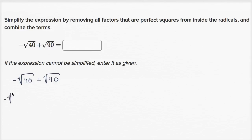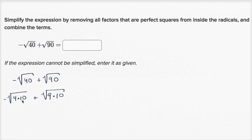So this is the negative square root of four times 10, plus the square root of — well, what jumps out at me is that 90 is divisible by nine. Nine is a perfect square, so nine times 10. And if we look at the tens here, 10 does not have any perfect squares in it anymore. A full prime factorization of 10 would be two times five, so there are no perfect squares in 10. We can work it out from here.